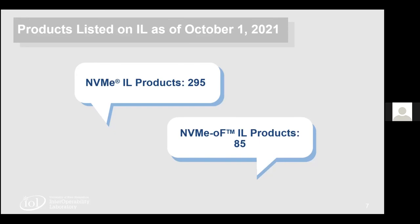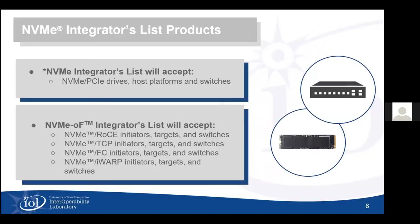What can go on the NVMe integrators list? The NVMe integrators list accepts drives, host platforms, and switches. The NVMe over Fabrics integrators list accepts RoCE, TCP, Fibre Channel, iWARP initiators, targets, and switches.